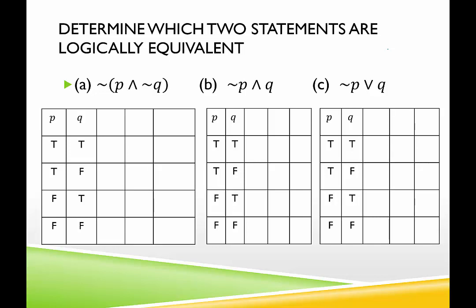Two of them were equivalent — which two was it? Was it A and B, A and C, or B and C? For A, I need not Q — that negation. Then I need P and not Q, and then the negation of P and not Q. So not Q would be false, true, false, true.